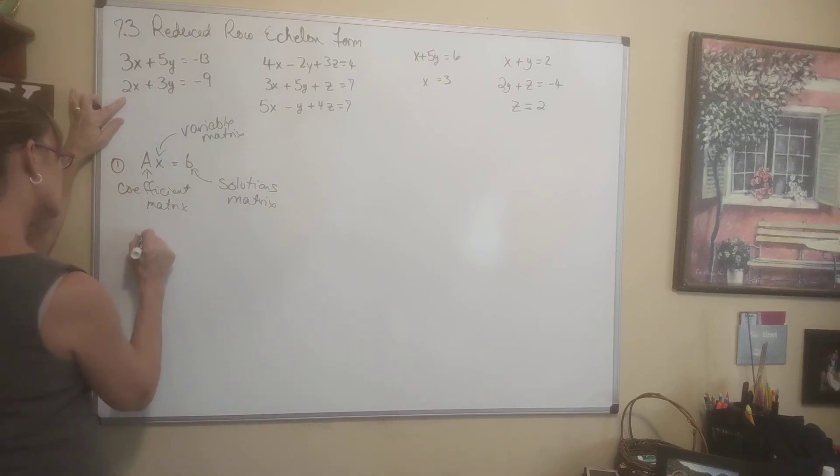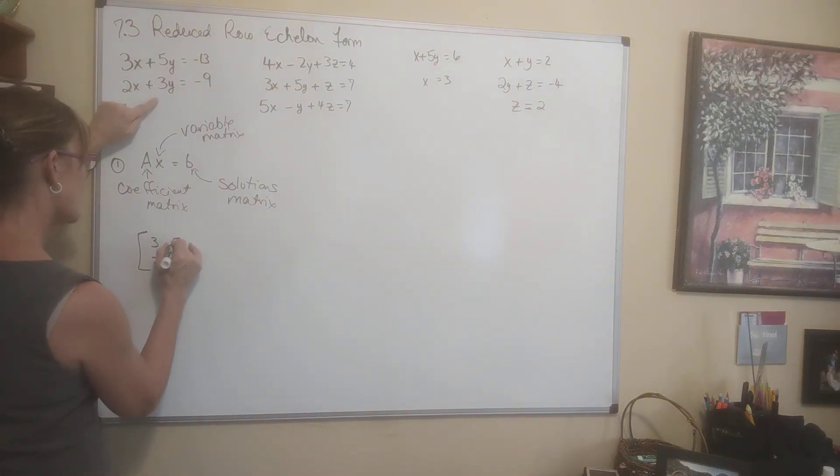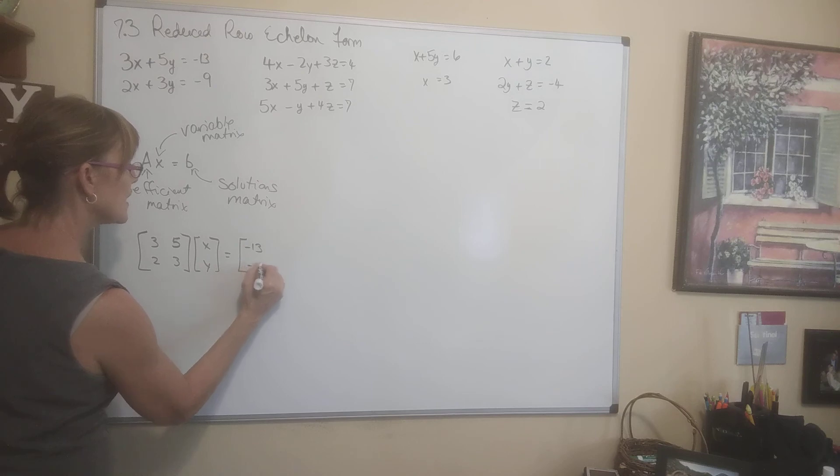For this first system, A is the coefficient. Coefficients are the numbers in front of the variables. So the X coefficients are 3 and 2. The Y coefficients are 5 and 3. That's my coefficient matrix. Then I'm going to multiply it by my variable matrix. My variables that show up are X and Y. And this is equal to the solutions matrix, which is the numbers, the solutions of these equations over here. Negative 13, negative 9.